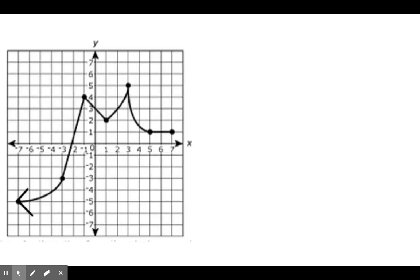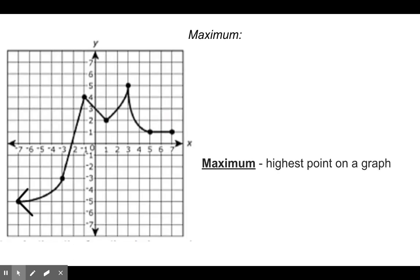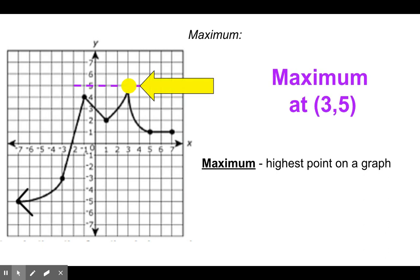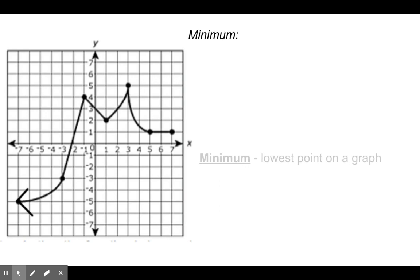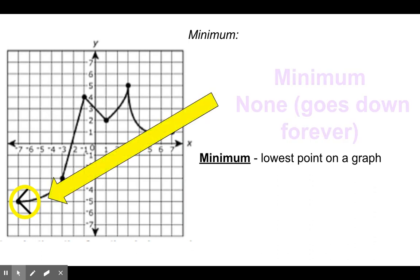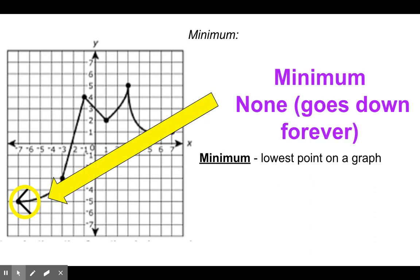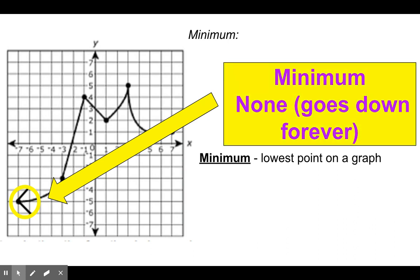Looking at this graph, the maximum, remember, is the highest point on the graph. So the maximum is at 3, 5. Similarly, the minimum is the lowest point on the graph. There's an arrow, so there's no minimum — we say minimum: none. It goes down forever, and it is also traveling left as well.